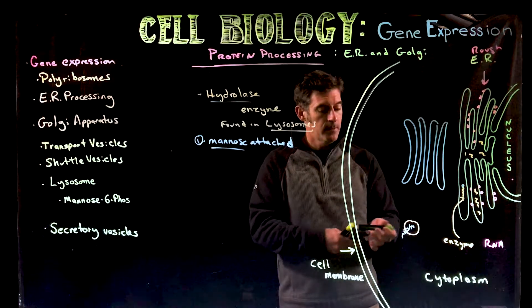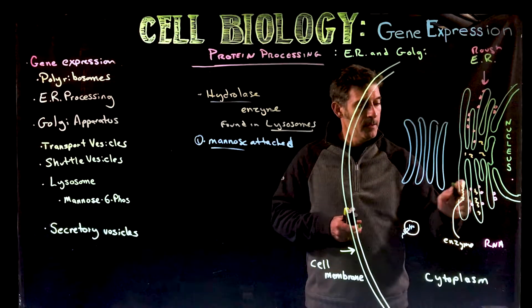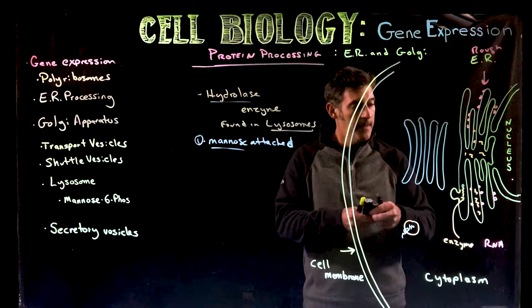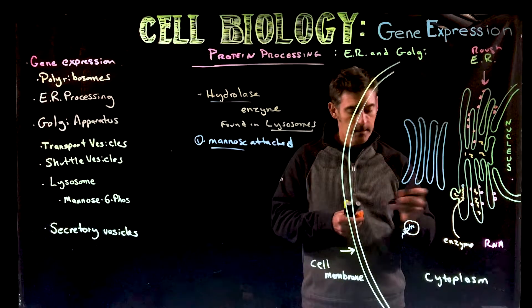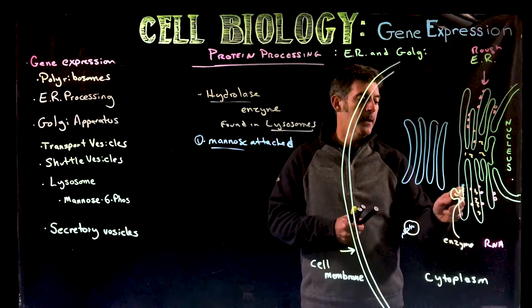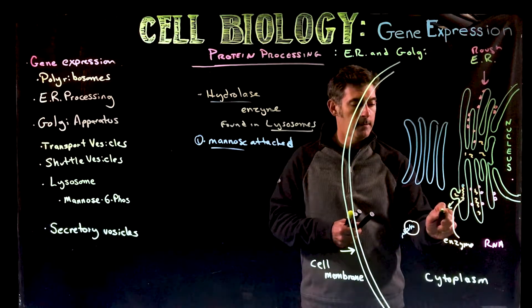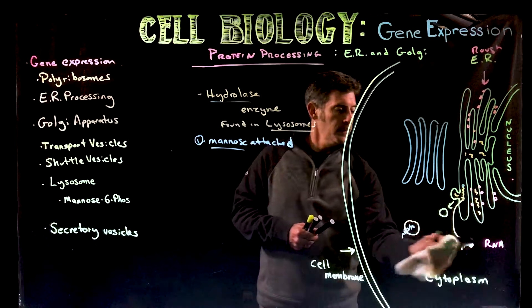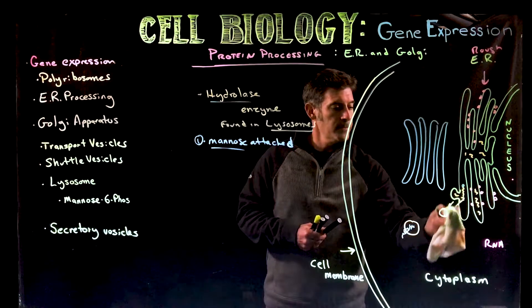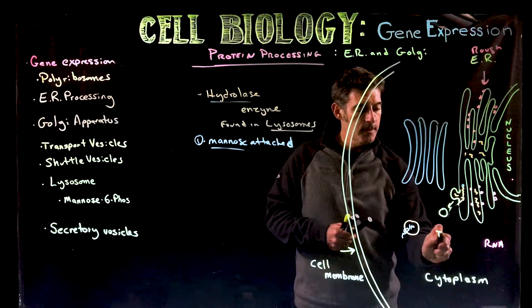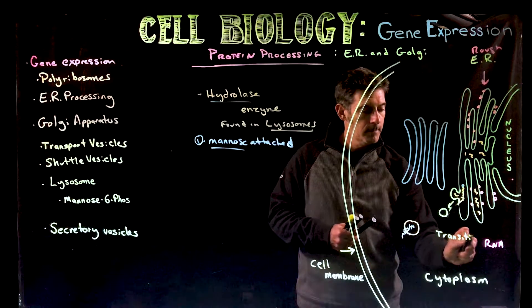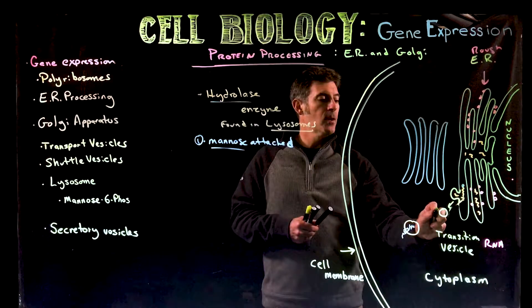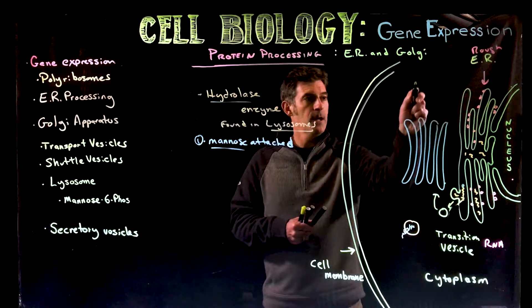What's going to happen is we're going to get a form of exocytosis where essentially a vesicle is going to form, package up this enzyme, and then break off. This is our vesicle — and that vesicle is going to be called a transition vesicle. Then it's going to move to the Golgi apparatus.